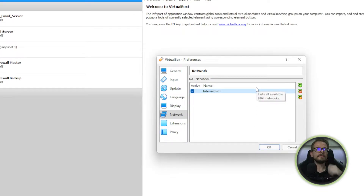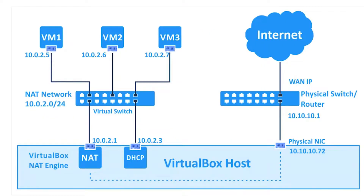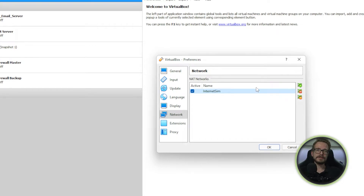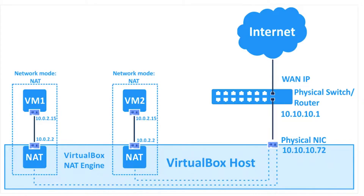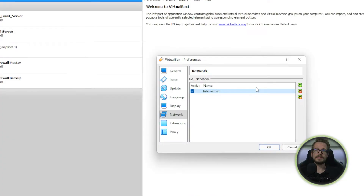The benefit of setting up a NAT network versus a normal NAT mode in VirtualBox is that a NAT network allows you to communicate with all devices plugged into that network as if it were a Layer 2 network, with its own DHCP server and gateway for internet access. If you leave it as normal NAT mode — the default in VirtualBox — the devices wouldn't be able to communicate between each other even if they appear to be on the same IP range. So you must set up a NAT network as we've just done.